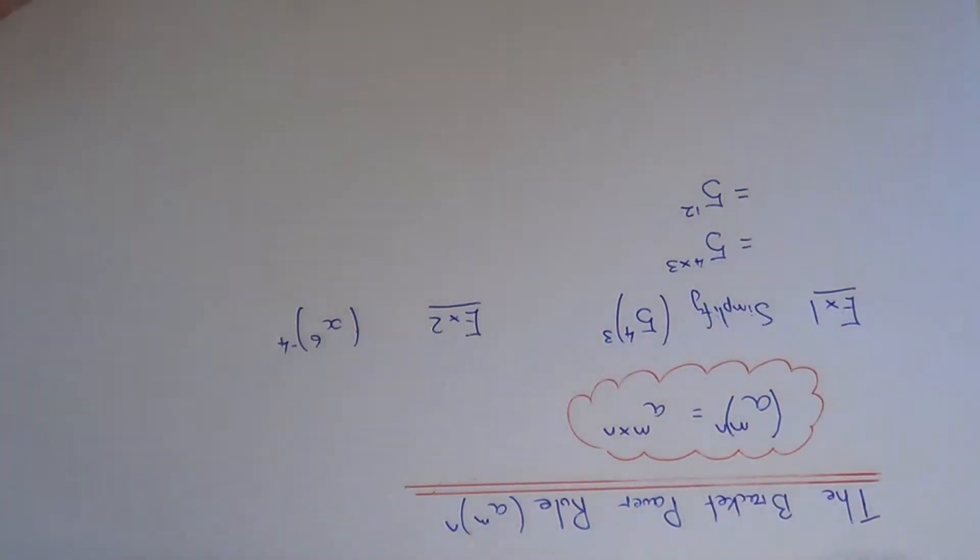Let's move on to example two. This time we need to simplify x to the power of six in a bracket to the power of negative four.